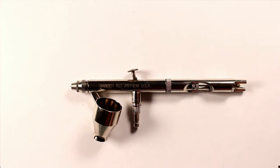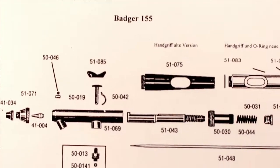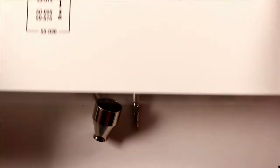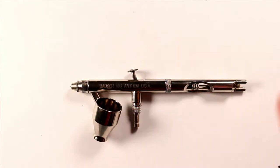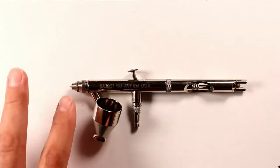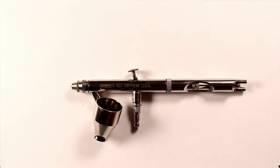All right, today we are looking at the Badger 155 Anthem and we're going to be disassembling and reassembling it. The first thing that I do is usually print out a diagram of what I'm going to be taking apart. That'll help along the process. There's one available on Badger's website. If you just type in Badger 155 Anthem instructions, you'll see it there.